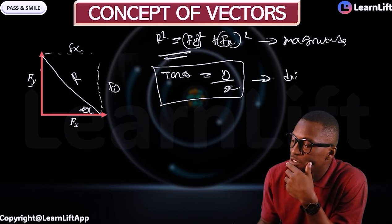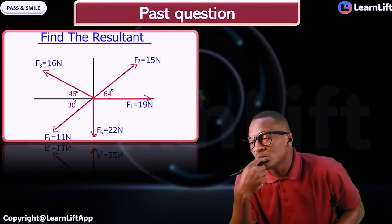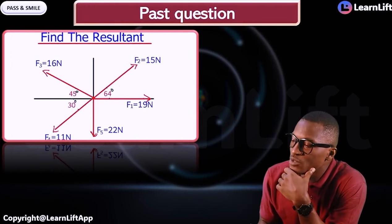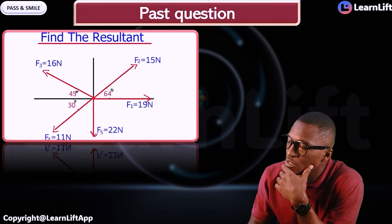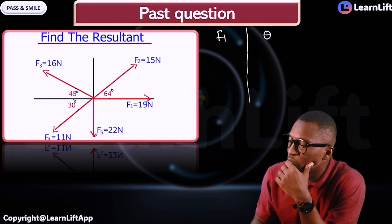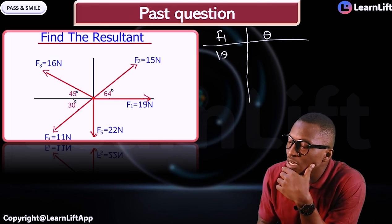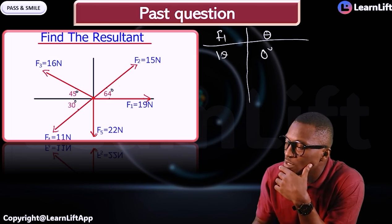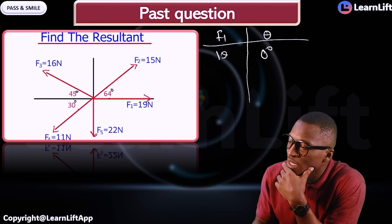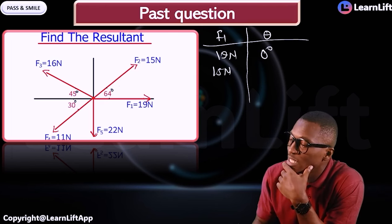Let's take a past question. We're finding the resultant of five forces. First, I'll bring out all the forces and angles in a table. F1 = 19 N at 0°, F2 = 15 N at 64°, F3 = 16 N — let me identify the angle — which is 45°.